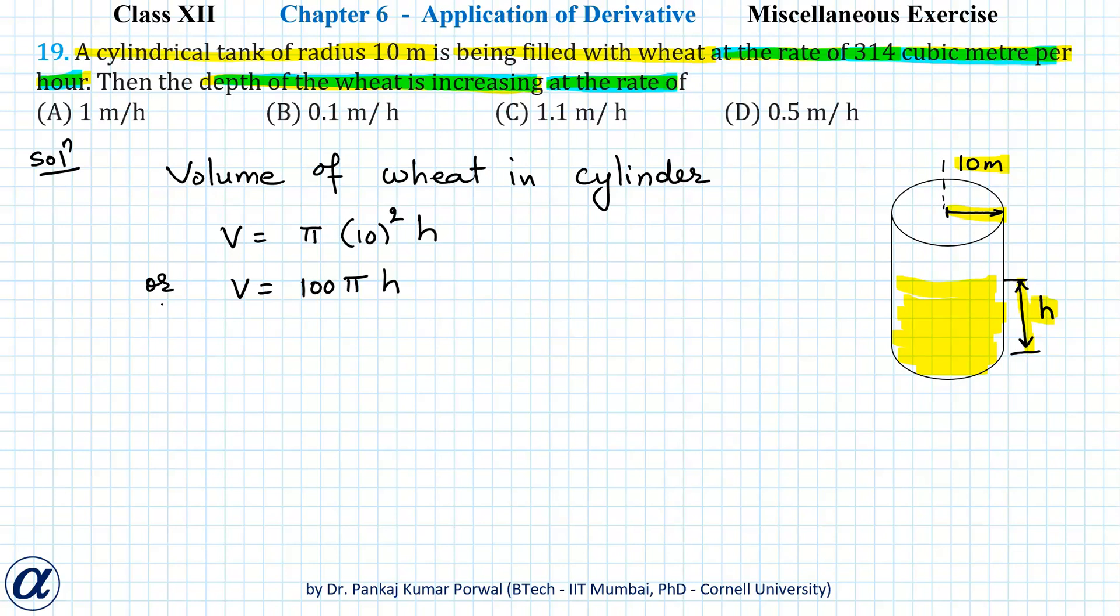I will differentiate this equation with respect to time, so I get dV/dt = 100π(dh/dt). This gives me dV/dt = 314 cubic meters per hour equals 100 × 3.14 × dh/dt.